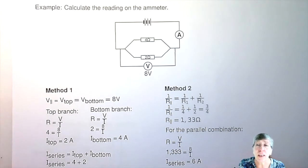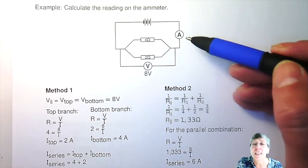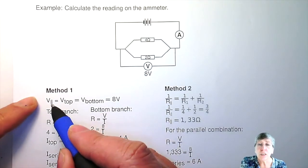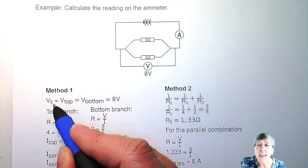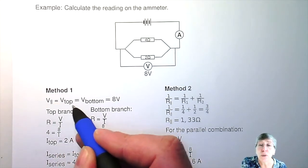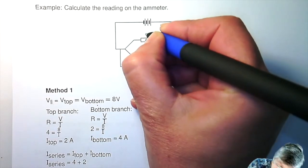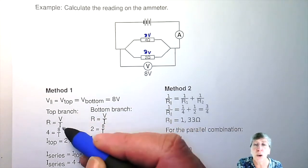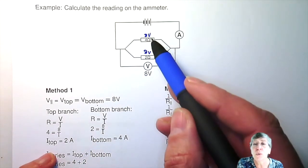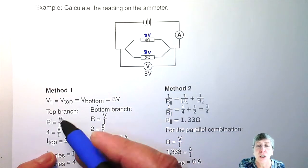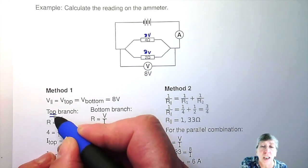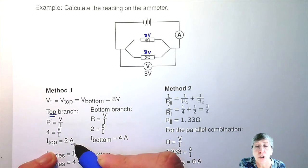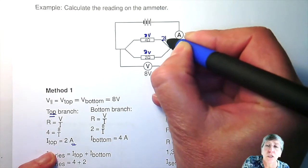Now let's look at an example. The question was: calculate the reading on the ammeter. They give you 8 volts over this whole parallel combination. If you've got 8 volts over the whole parallel, it means that's true for the top branch and true for the bottom branch — 8 volts over each. Working only with the top branch, which has a resistance of 4 ohms and 8 volts, you get a current of 2 amperes.